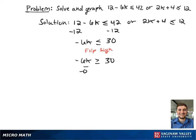This gives negative 6k is greater than or equal to 30. We have to get k by itself, so we're going to divide both sides by negative 6. This results in k is greater than or equal to negative 5.